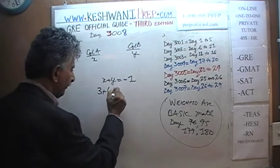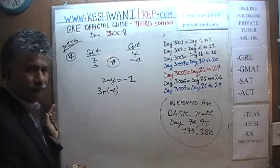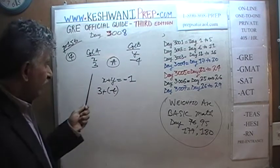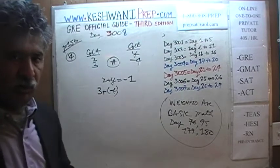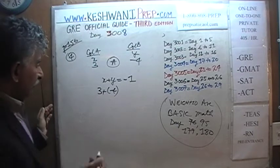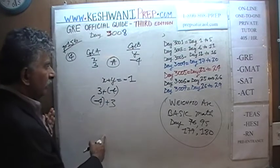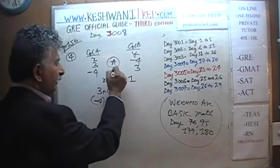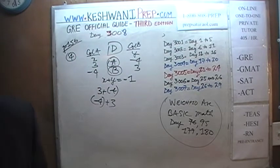How about 3 plus negative 4? That's negative 1, so X is 3 and Y is negative 4 — in this scenario the answer is A. But if you stop here and pick answer A, you're claiming the quantity in Column A is always greater. That is not the case, because there are no restrictions on X and Y. Instead of 3 plus negative 4, try negative 4 plus 3. Now X is negative 4 and Y is 3 — the answer is B. Since we have a conflicting answer, the correct answer is D.